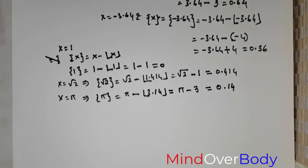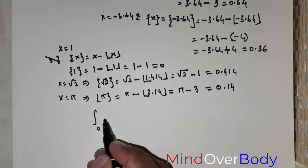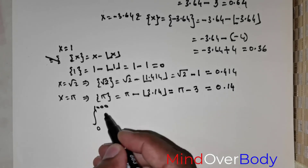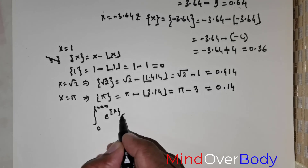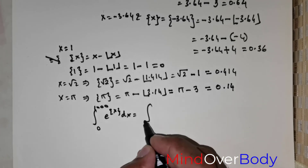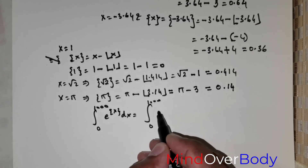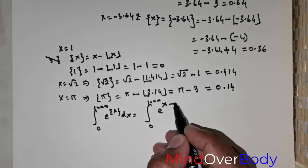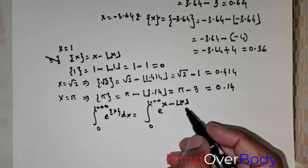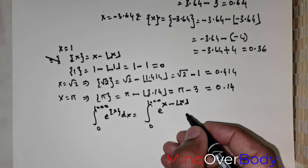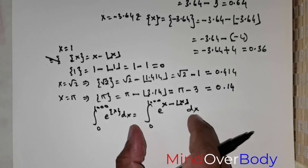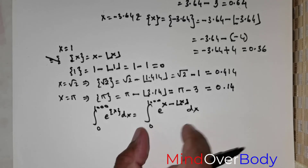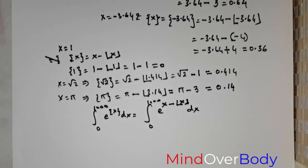The given question we started with asks us to find the integral from 0 to 1000 of e raised to the power of the fractional part of x, dx. This can also be written as the integral from 0 to 1000 of e raised to the power of x minus the floor function of x, dx. You need to be prepared for either alternative form of the question.